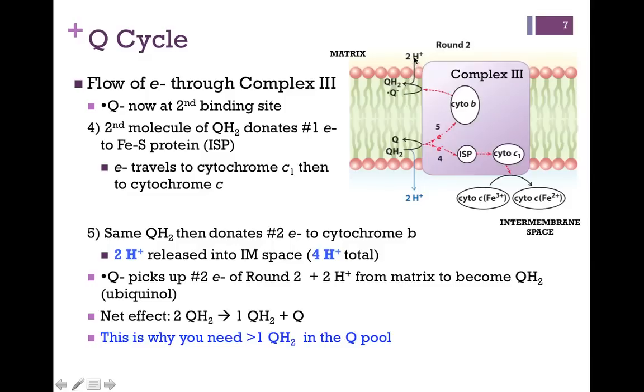It will also pull two protons from the matrix to be fully reduced to QH2. So our net reaction is we've used two molecules of QH2. They were both fully oxidized, but we re-reduced one of those molecules. So we only netted one Q that was fully oxidized, meaning we had two electrons, and they were passed in steps to two molecules of cytochrome C. So hopefully you can see why we need multiple contributors to this Q pool. For every electron we transfer through Complex 3, we need a molecule of QH2.